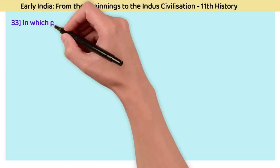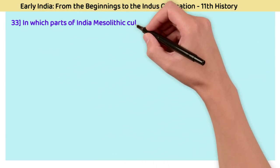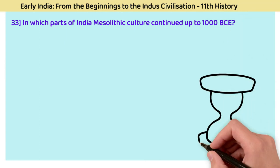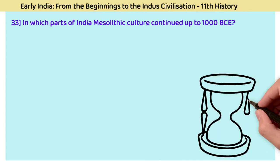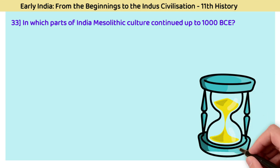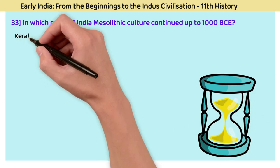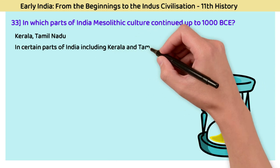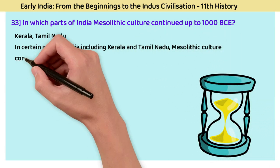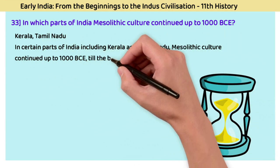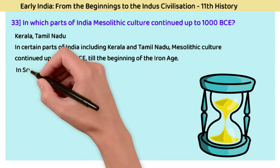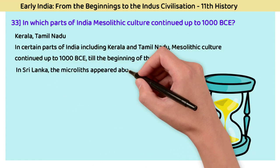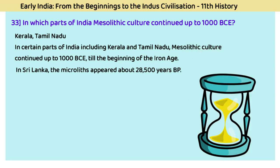Question 33: In which parts of India did Mesolithic culture continue up to 1000 BCE? The answer is Kerala and Tamil Nadu. In certain parts of India, including Kerala and Tamil Nadu, Mesolithic culture continued up to 1000 BCE, which is still the beginning of the Iron Age. In Sri Lanka, microliths appeared about 28,500 years BP.